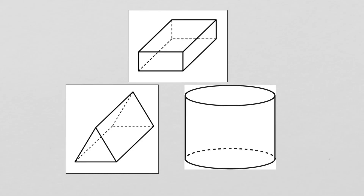I know cylinder doesn't have the word prism in it. A cylinder would technically be a circular prism — we don't call it that, but you can think about it that way if it helps. So we're going to focus on rectangular prisms, triangular prisms, and cylinders. There are other kinds but we're not going to worry about them right now.